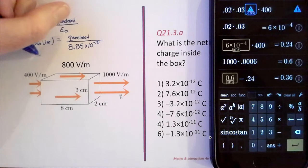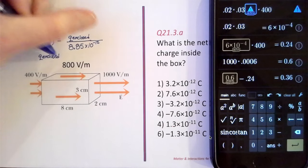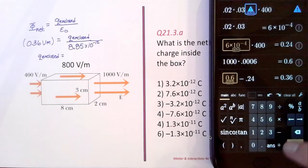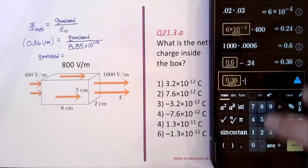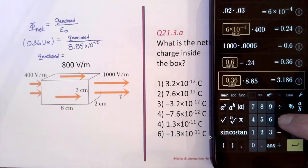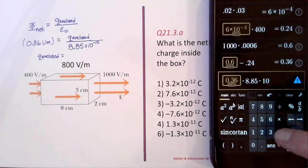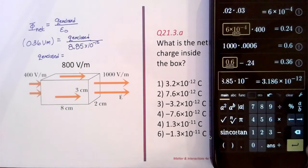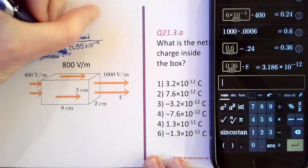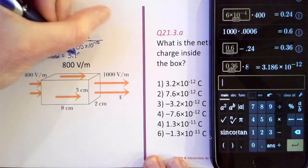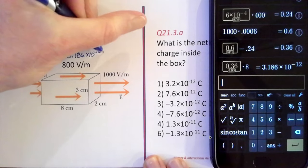And then solving for Q enclosed, that's going to be 0.36 times 8.85 times 10 to the negative 12. And that gives us 3.186 times 10 to the minus 12 coulombs.